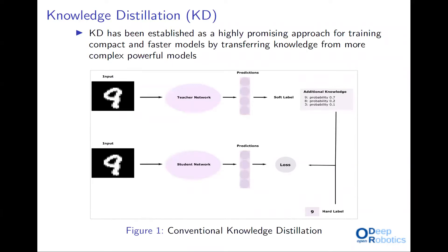Knowledge distillation has been established as a highly promising approach for training compact and faster models. In its seminal approach, it describes the procedure where the knowledge of a high-capacity model, known as teacher, which exhibits high performance, is transferred to a more compact and faster model known as student. The student model is trained to mimic the so-called soft labels produced by the teacher by raising the temperature of the softmax activation function on the output layer of the network. These soft labels convey useful information about the way the model learns to generalize, trying to reveal similarities over the data — information typically ignored in a classification problem.